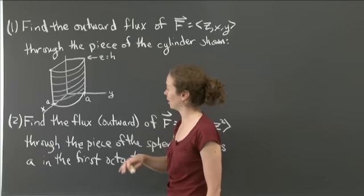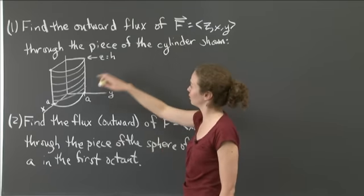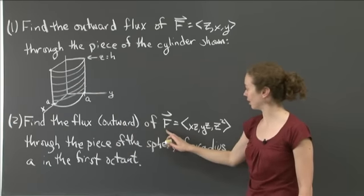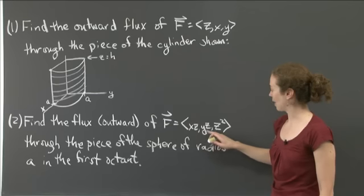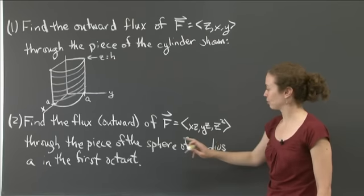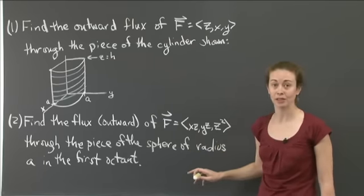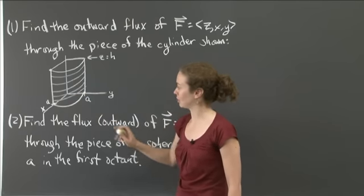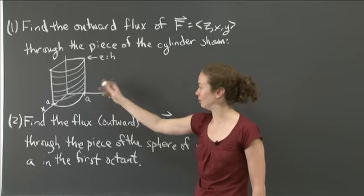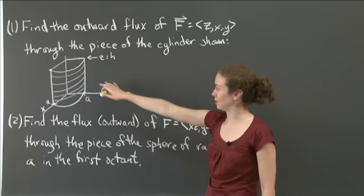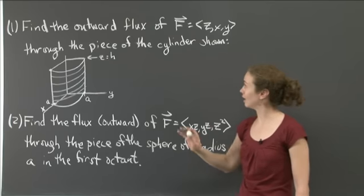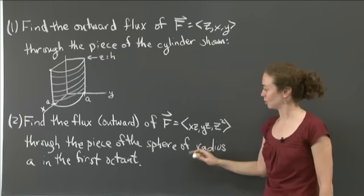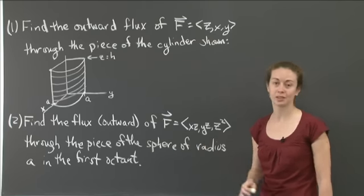So the first question is the outward flux of this vector field through that piece of the cylinder. And I'd also like you to find the outward flux of the vector field (xz, yz, z²) through the piece of the sphere of radius a in the first octant — the same part of three-dimensional space as the cylinder piece. Find the outward flux of the vector field listed through each surface.